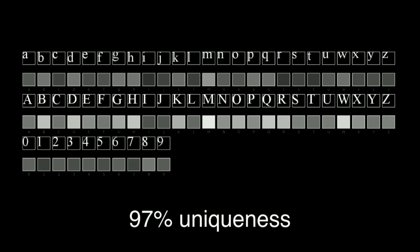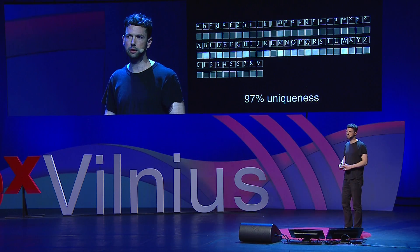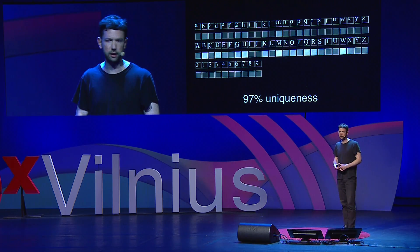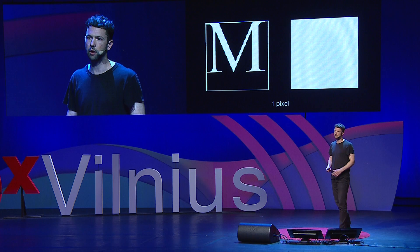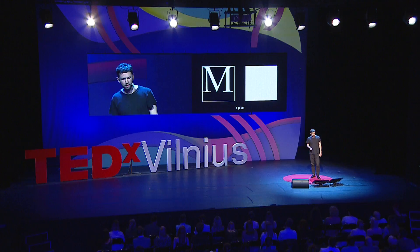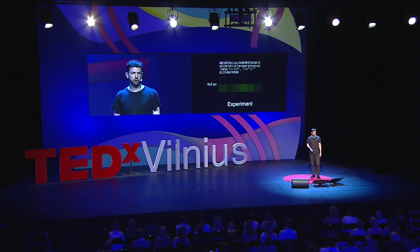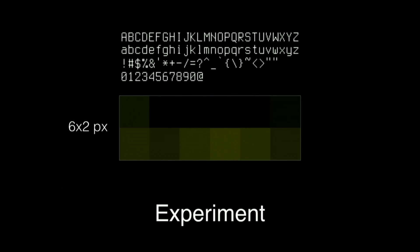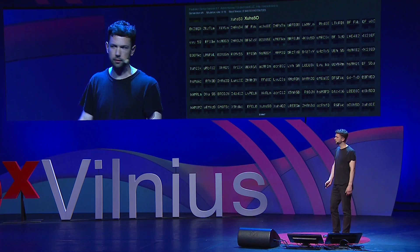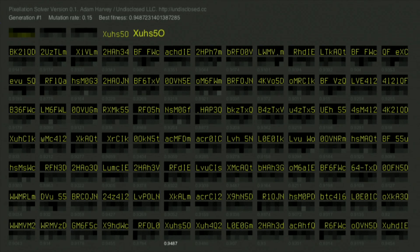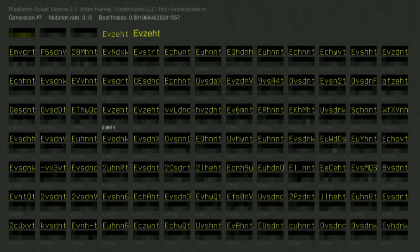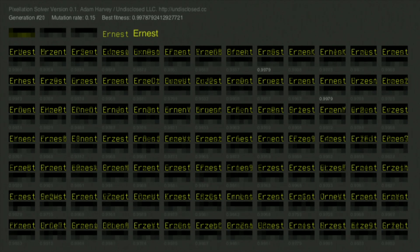We can do an experiment with just one pixel of information. We can encode nearly every letter in the Times Roman font set with about 97% uniqueness. The most unique character is M, meaning it has the highest amount of separation from all the other characters. A lot of people post text that's been pixelated online — that's not a redaction, it's a reduction in information. In this experiment, you can see the pixelated text, which is only 12 pixels. When you run that against a genetic algorithm, you discover that those 12 pixels said 'earnest.'